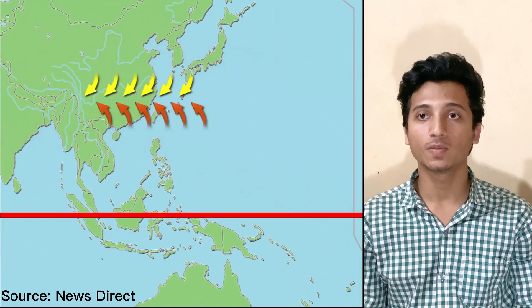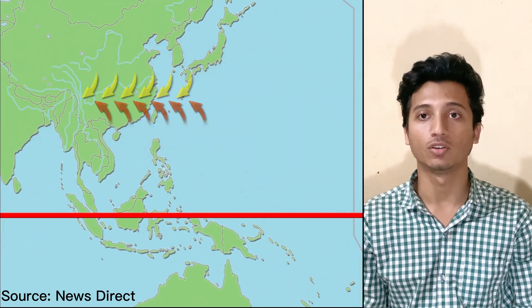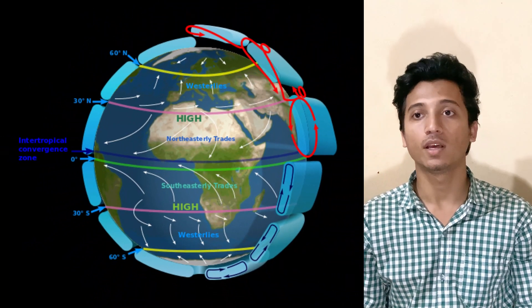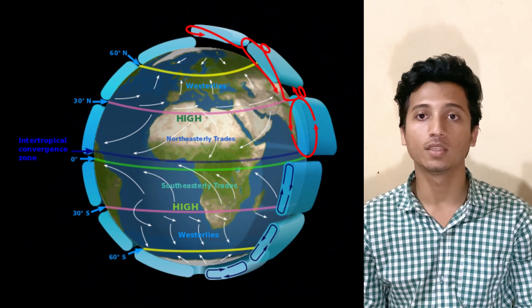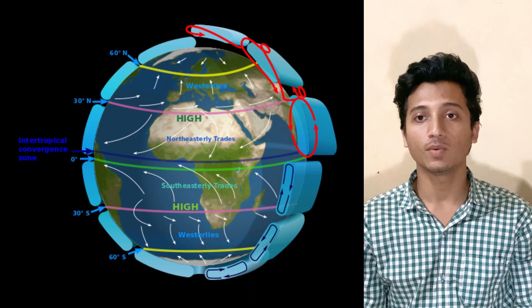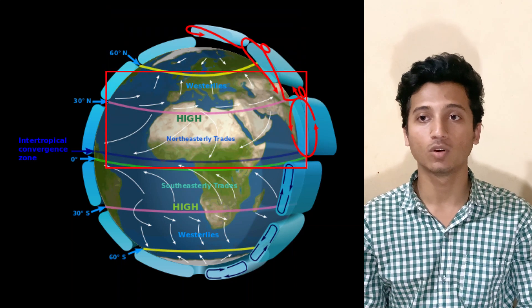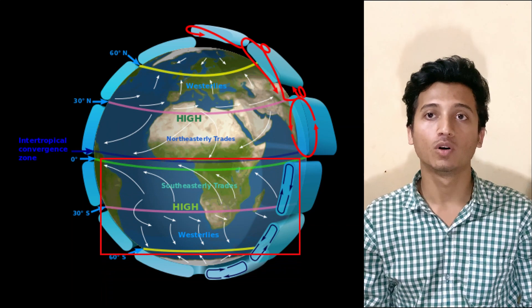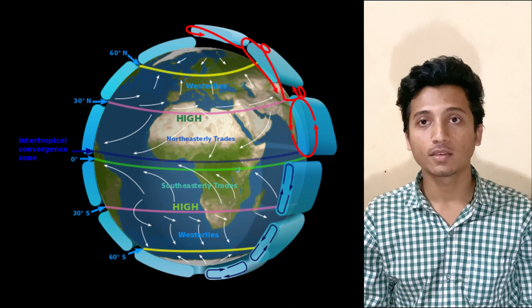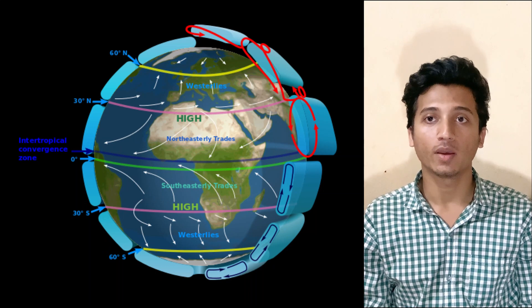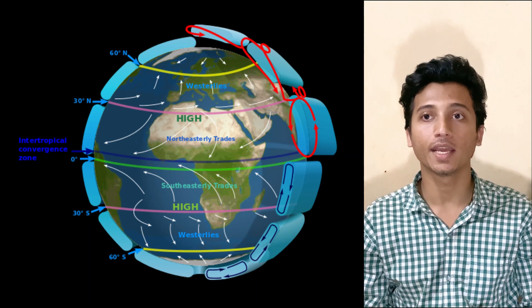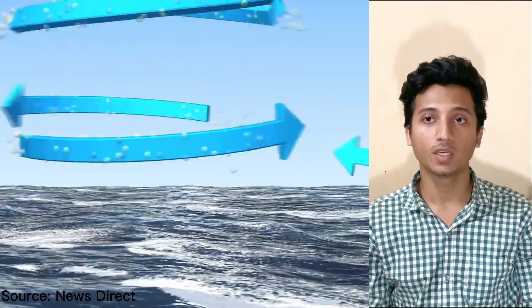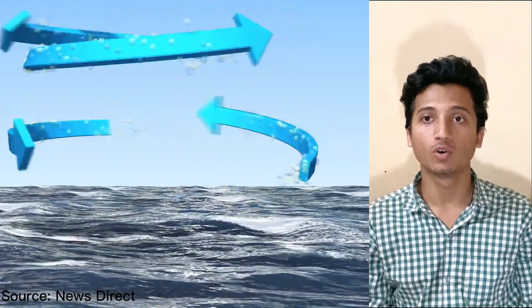Formation of the Equatorial Trap: The Equatorial Trap forms as the result of the convergence of the trade winds from the Northern Hemisphere and the Southern Hemisphere near the equator. These are easterly winds that blow from the east in the tropics. In the Northern Hemisphere, the trade winds blow from the Northeast towards the Southwest, while in the Southern Hemisphere, they blow from the Southeast towards the Northeast. As the trade winds of the two hemispheres converge near the equator, they create an area of low pressure, because the warm, moist air from both hemispheres rises and cools, causing water vapor to condense into clouds and precipitation.